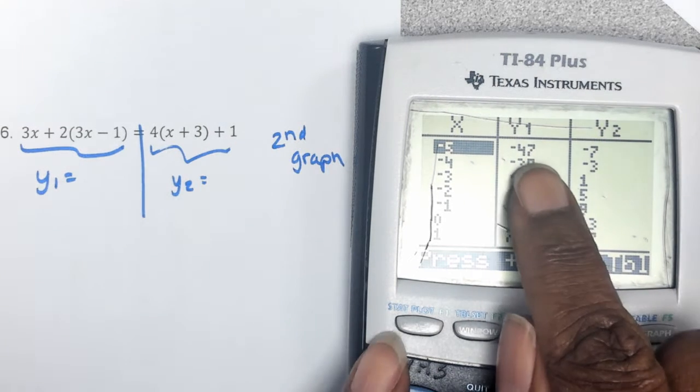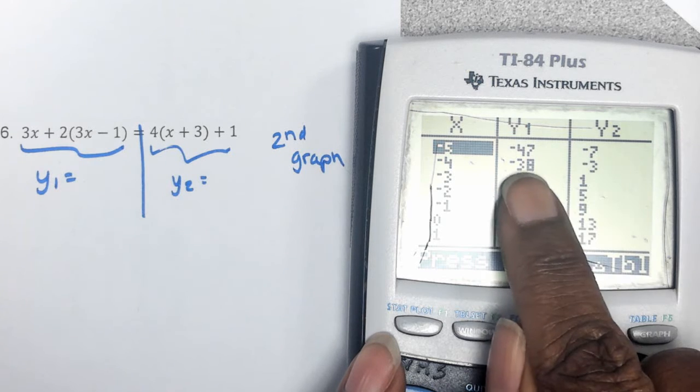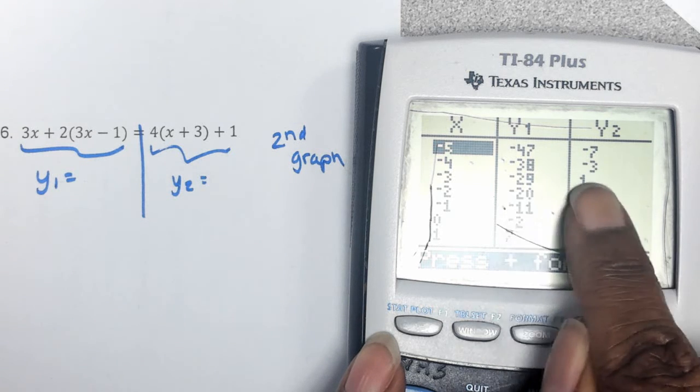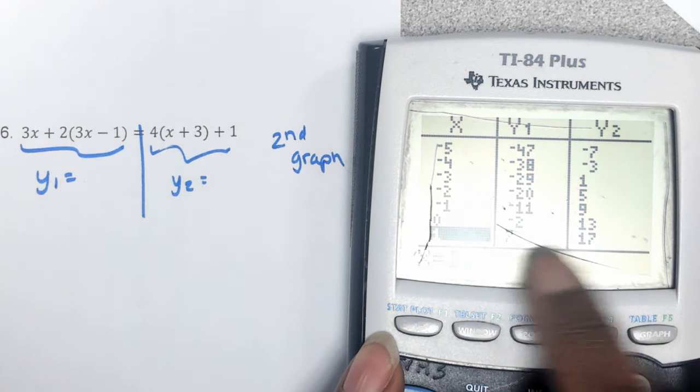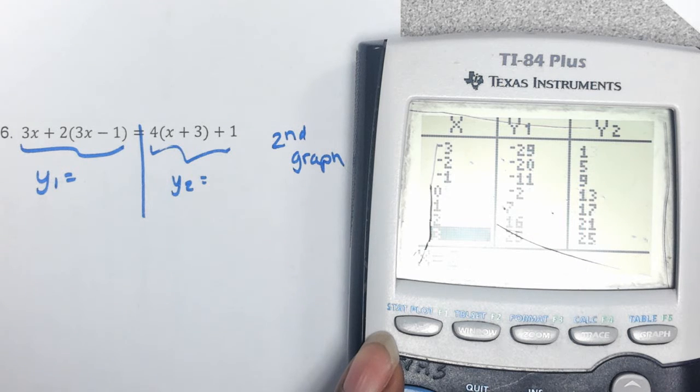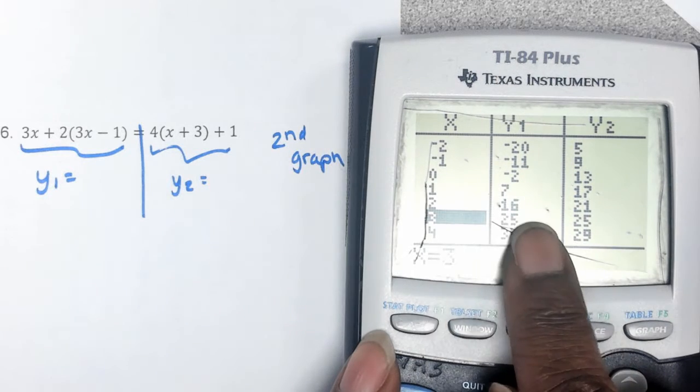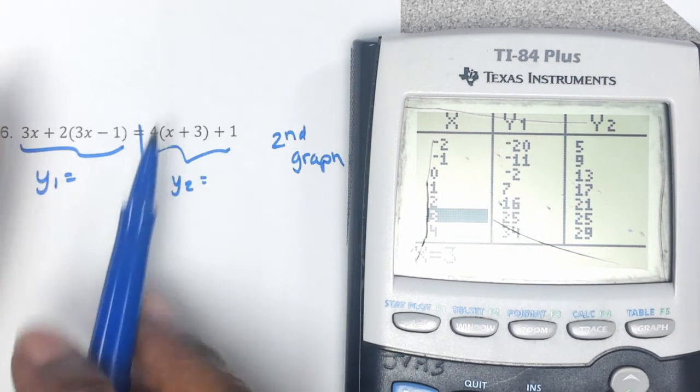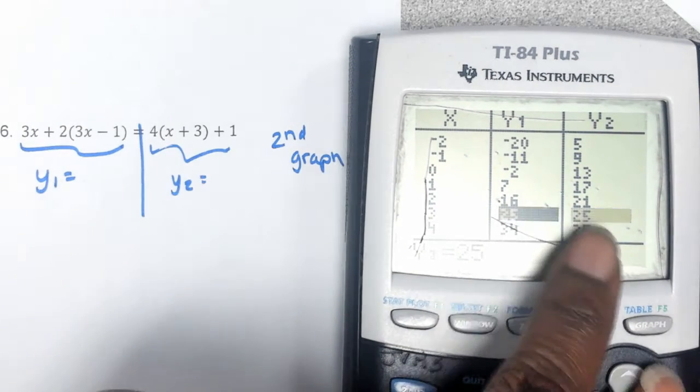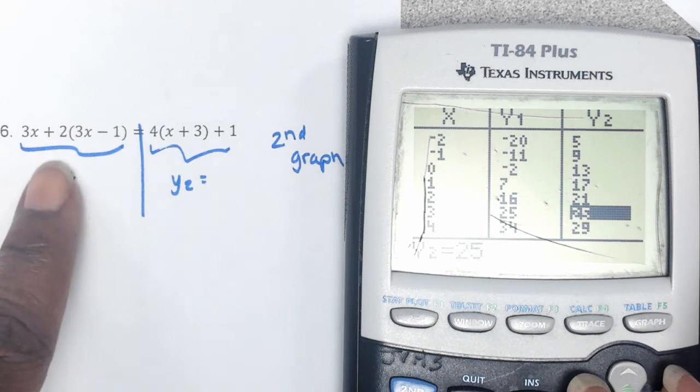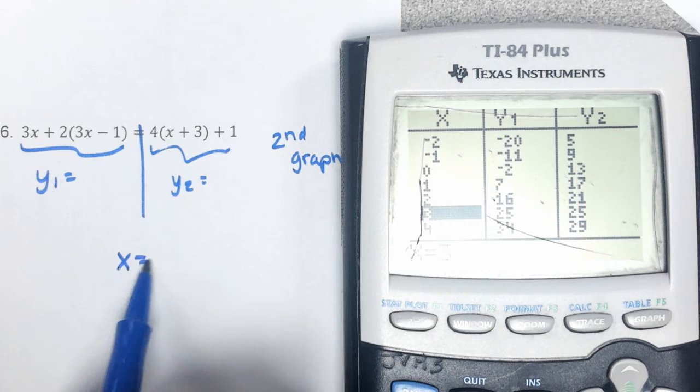And I have a table. And what I'm looking for is if this is negative 47 and negative 7, nope, not my solution. Negative 38 and negative 3, not my solution. Negative 29, I'm looking for the y1 and the y2 to match. I need these two to be equivalent. Ah, there we go. You see that? So if I'm trying to solve for x, yes, I wanted to see where the y1 and y2 were the same. They're both a 25. But did it ask me to solve for y? No, it asked me to solve for x. So your answer or your solution is x equals 3.